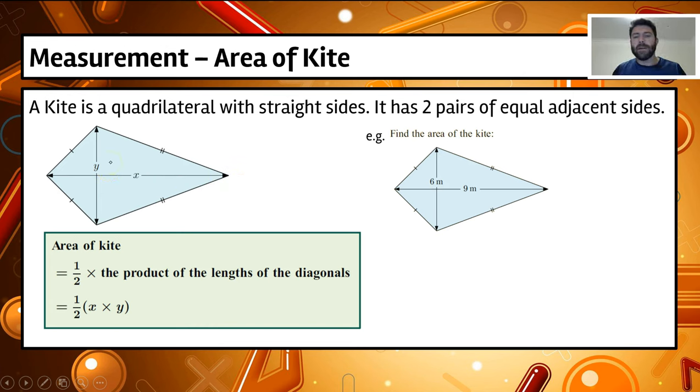Basically the area of the kite is half times the product of the lengths of the diagonals. So if we multiply the two diagonals, we divide that by two. So effectively we could also have this as the area equals x times y divided by two. I tend to like the divided by two formula, but you can do it whichever way you like.